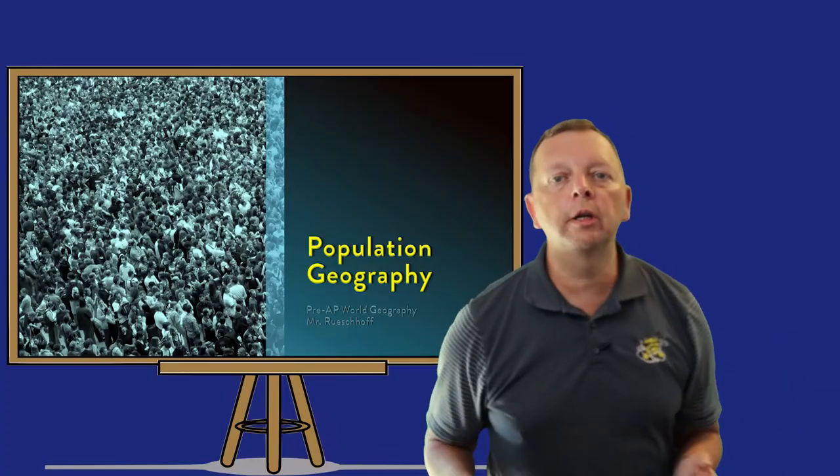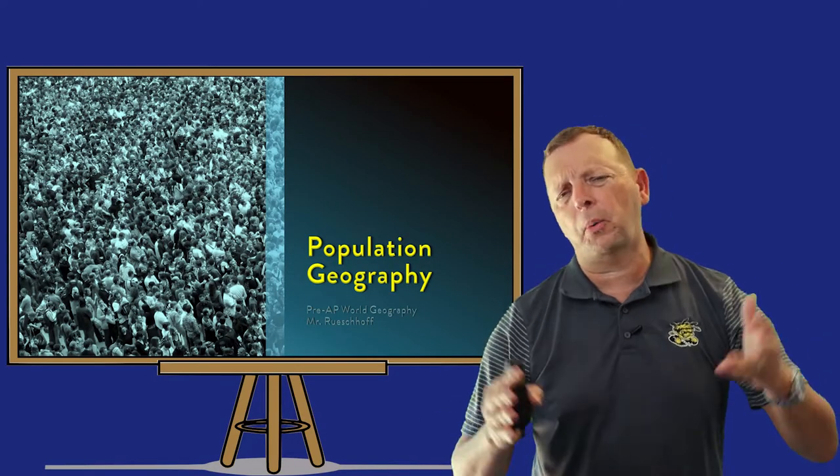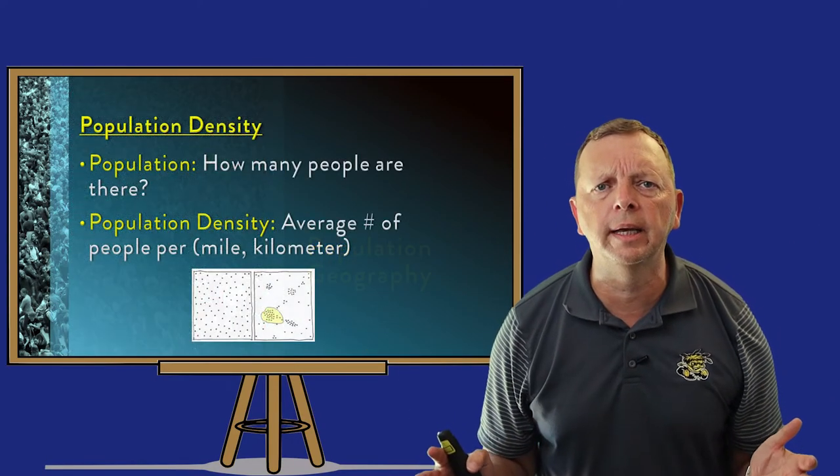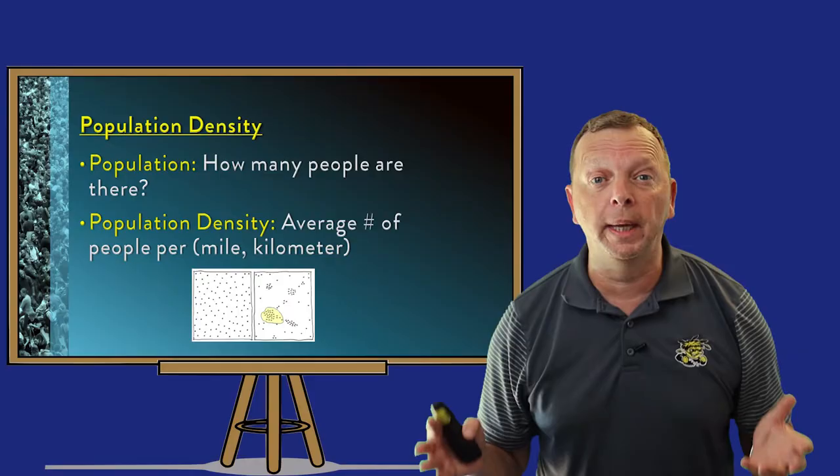This is our second lesson in our Human Geography Unit. In our last lesson, we talked about culture and how it describes everything we are and everything we do. But if we're going to be talking about human geography, obviously we're going to have to be talking about humans, and that means we have to start talking about population. Population quite frankly is simply how many people are there.